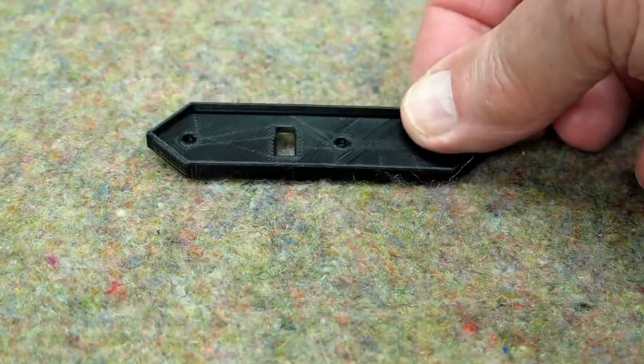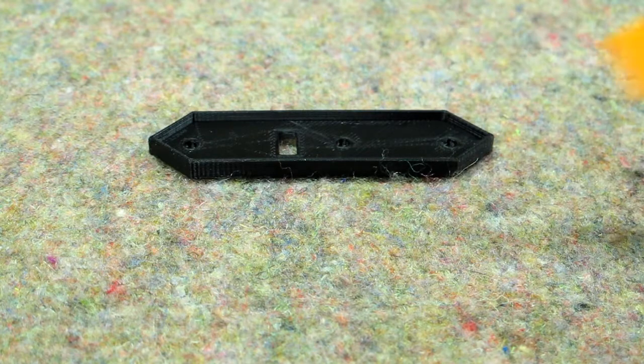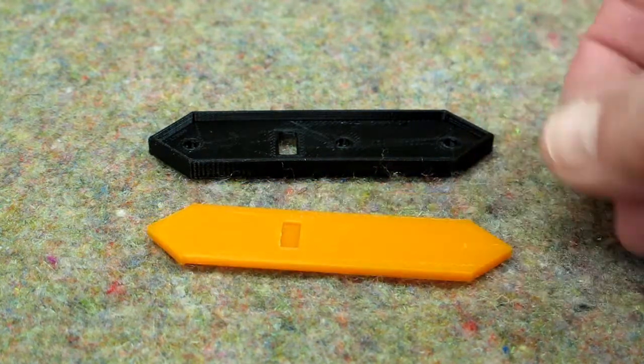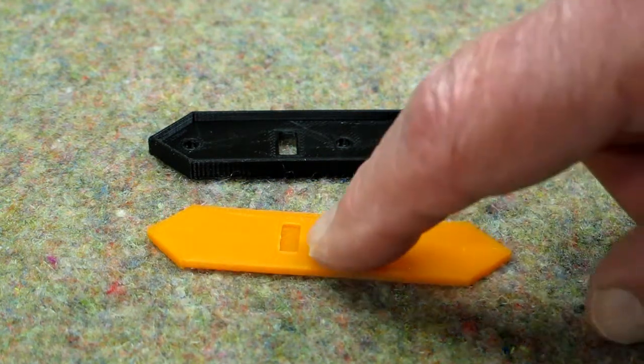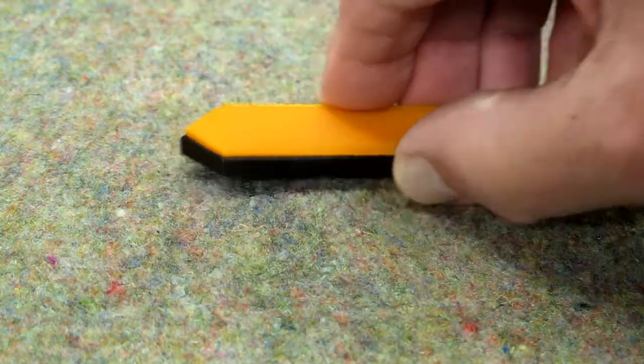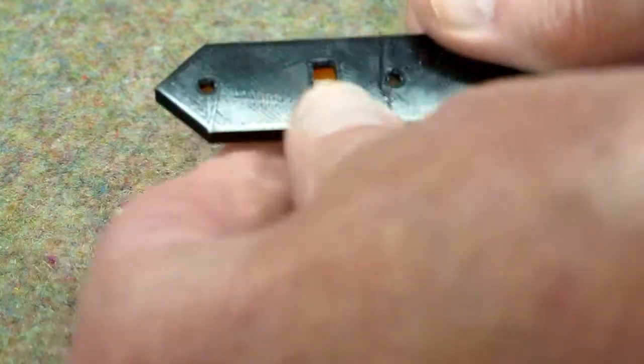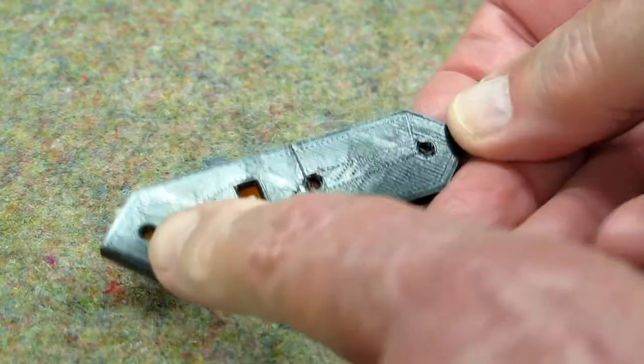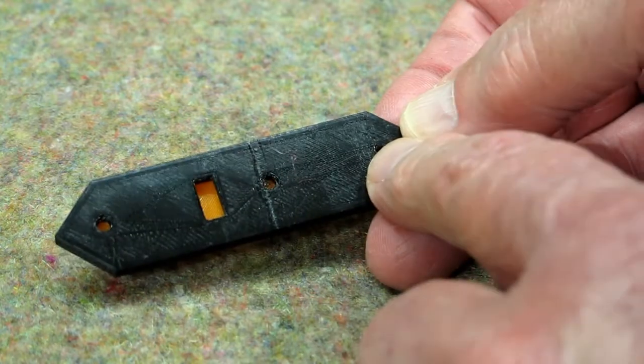I changed the design a little bit and you can print whatever color insert you want. There's a matching pocket on the insert. Put that together. Squeeze it together real good and you have three holes here to put glue in. Make sure that's good and solid.